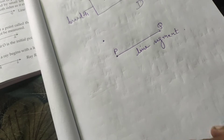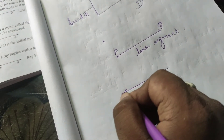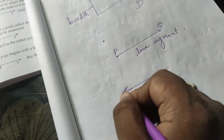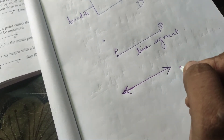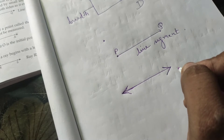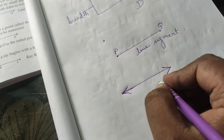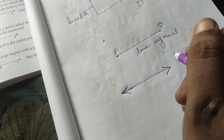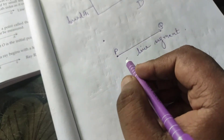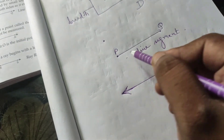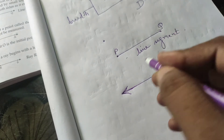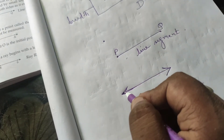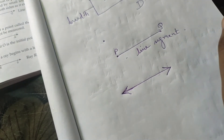What is the difference between a line and a line segment? A line is never ending — it goes on in the left direction and in the right direction without stopping. A line segment has two endpoints, for example point P and point Q, but a line has no endpoints.